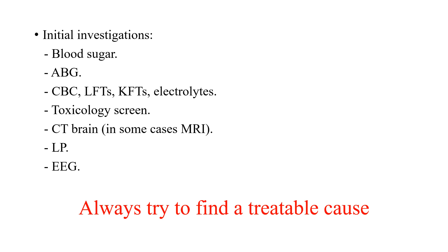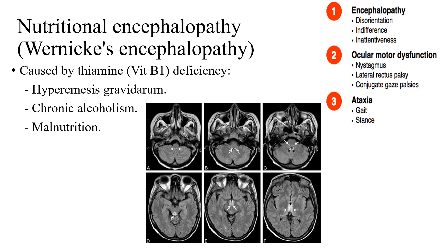Initial investigations for a patient with disturbed conscious level in the ER should include blood sugar, arterial blood gases, basic labs such as CBC, liver functions, kidney functions, and electrolytes, and toxicology screen when the history is suggestive. CT brain is a must. Sometimes lumbar puncture and EEG are done. When facing a patient with disturbed conscious level in the ER, we are usually trying to find a treatable cause.